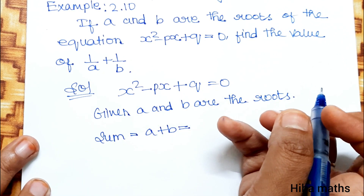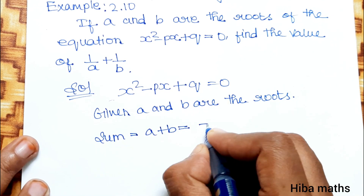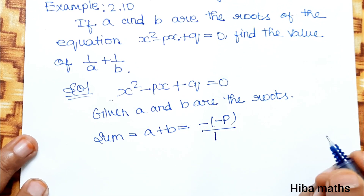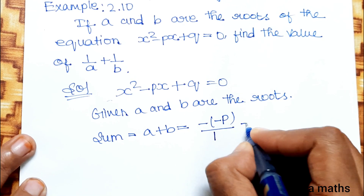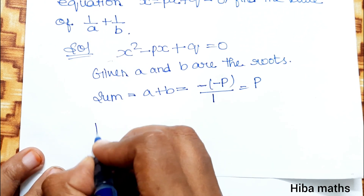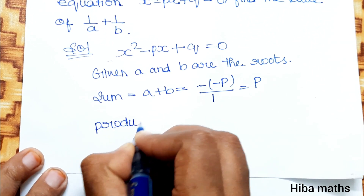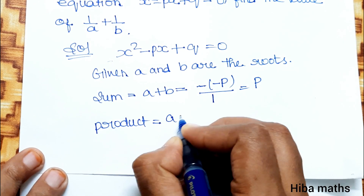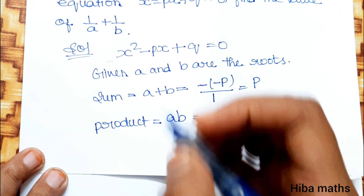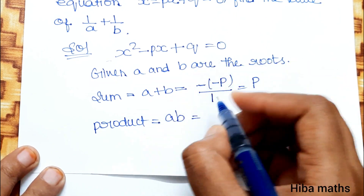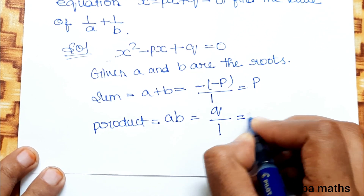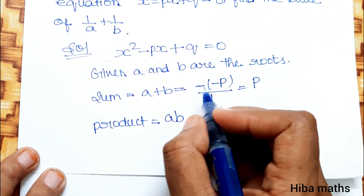Now, the a value is equal to the b value, and the c value is equal to minus of minus b divided by the x squared coefficient. The product of the roots: a into b equals constant divided by x squared coefficient. The constant is q and the x squared coefficient is 1, so a times b equals q.